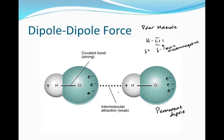The dashed or dotted line you see here is that weak intermolecular force — the dipole-dipole force. An intermolecular force is always weaker than an intramolecular force. So the covalent bond, or an ionic bond, is always stronger than an intermolecular force.